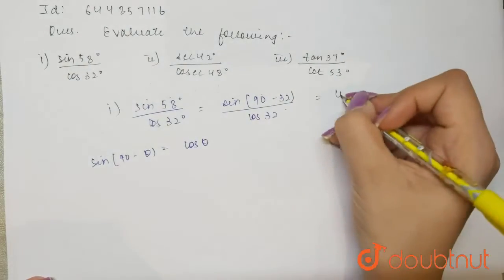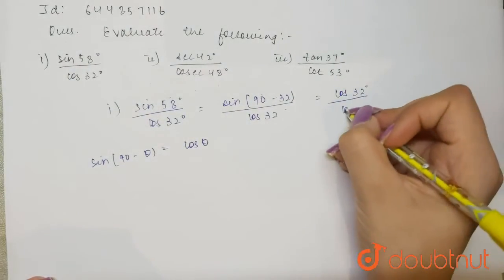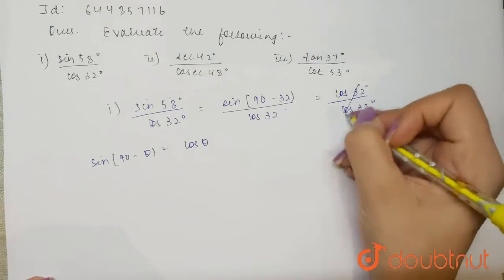will get one. Now the second one is secant 42° divided by cosecant 48°.